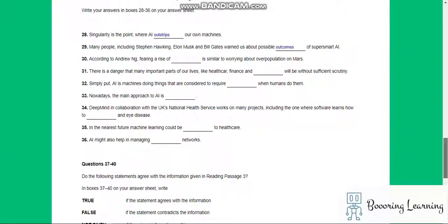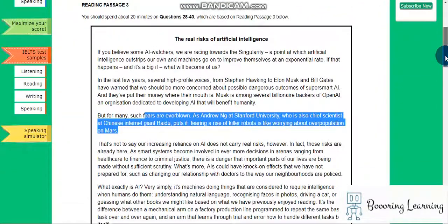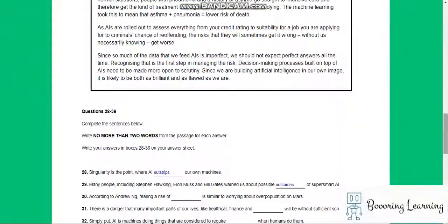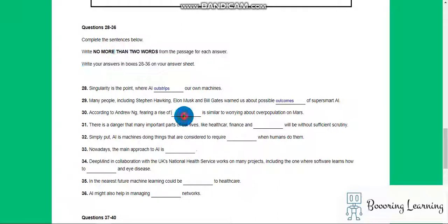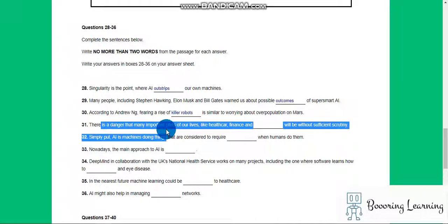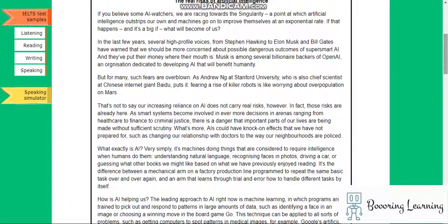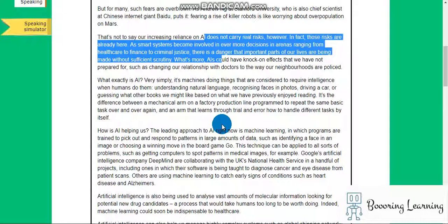The rise of the rise of killer robots, can I use two sentence, two words? Yes I can. There's a danger that many important parts of our lives like healthcare, finance, and there's a type of...